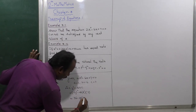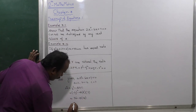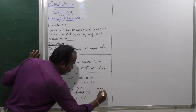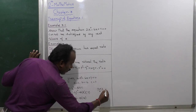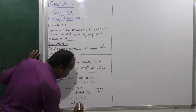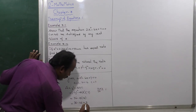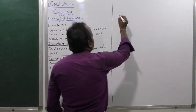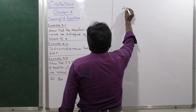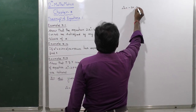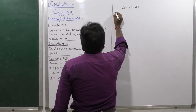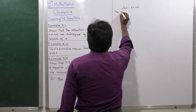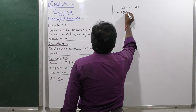Continuing the calculation: delta equals 36 minus 4 times 14, that is 36 minus 56. Therefore delta equals minus 20, which is less than 0.